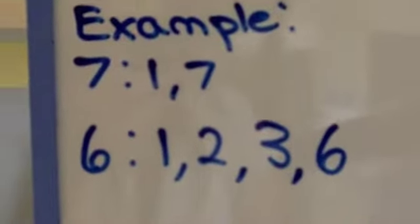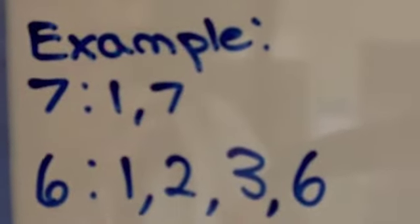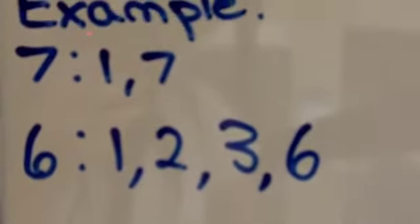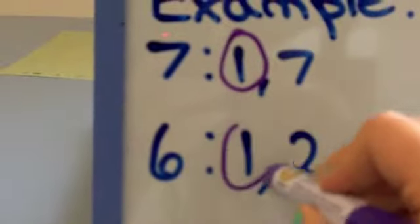So for an example, the factors of 7 are 1 and 7. The factors of 6 are 1, 2, 3, and 6. But in this case, the greatest common factor, or GCF, of both numbers is 1.